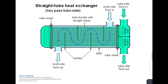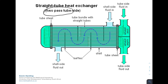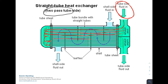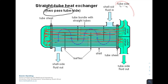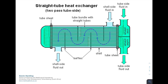We can also have a two pass tube side configuration. Here the hot fluid enters on the top right, flows through the tubes on the top half — that is the first pass — then doubles back and flows through tubes on the bottom half back to the right-hand side outlet — that is the second pass. The cold shell-side fluid still enters on the top right, flows around the baffles for better mixing, and exits at the bottom.